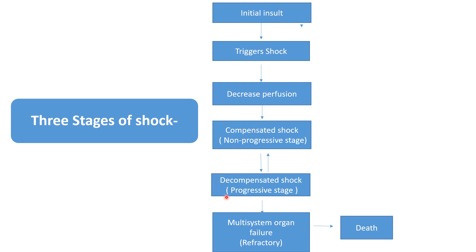Once the patient goes into the decompensated or progressive stage of shock, it is very tough to reverse the damage already occurred to the tissue because of hypoxia and poor perfusion. Hardly 20 to 30% of patients can go back to compensated and then to normal condition. If decompensated shock progresses, it will lead to multiple system organ failure, also called multiple organ dysfunction syndrome (MODS), labeled as refractory or resistant shock. After MODS, hardly 10 to 20% of patients will survive; otherwise it will lead to death.